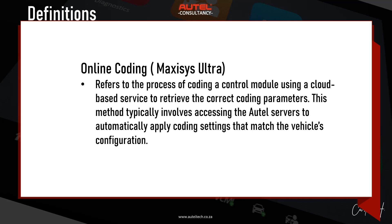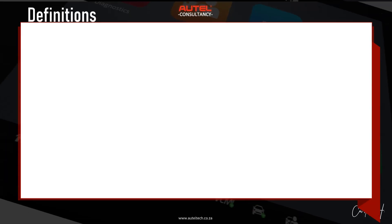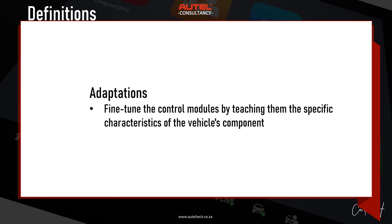Next are adaptations. Adaptations fine-tune the control module by teaching it the specific characteristics of the vehicle's components. To give you an analogy, adaptations are like training a new employee — they need to learn how to work within your specific company. We use adaptations when doing a throttle body adaptation, for example, ensuring the ECU knows the exact close and open position of the throttle, or a transmission adaptation, which helps the transmission control module learn shifting patterns for smooth operation.